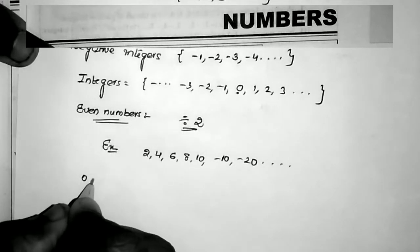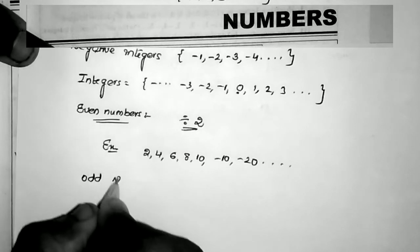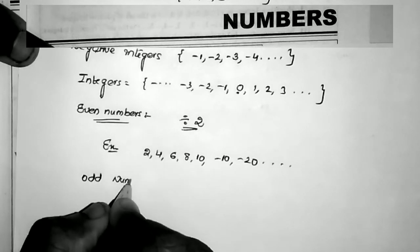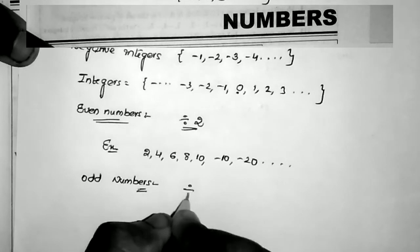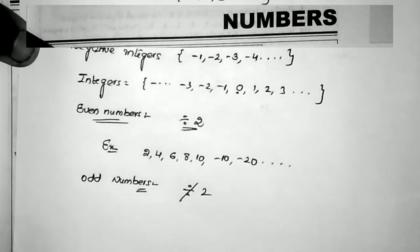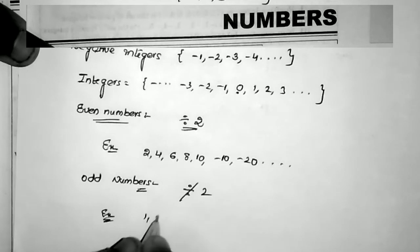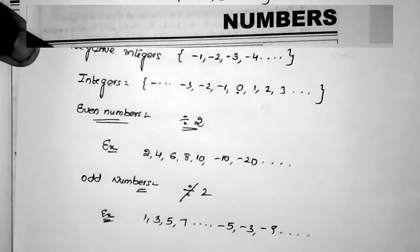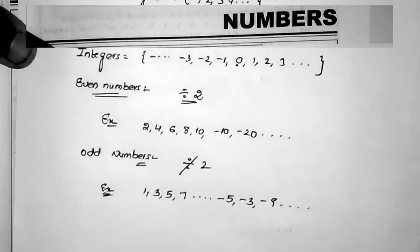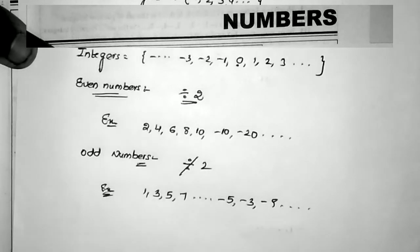And odd numbers. Odd numbers are the numbers which are not divisible by 2. Examples: 1, 3, 5, 7, or minus 5, minus 3, minus 9. These are the odd numbers — numbers which are not divisible by 2.